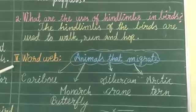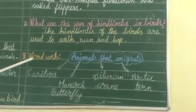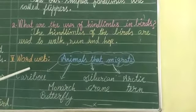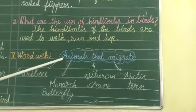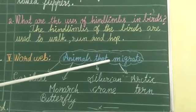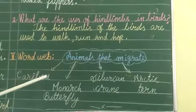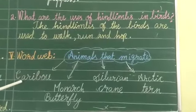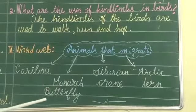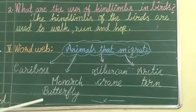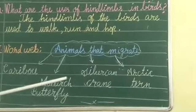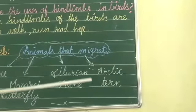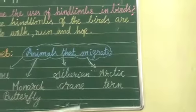Fifth Roman: Name the animals that migrate. Cairo, Monarch butterflies, Siberian crane, and Arpictor.